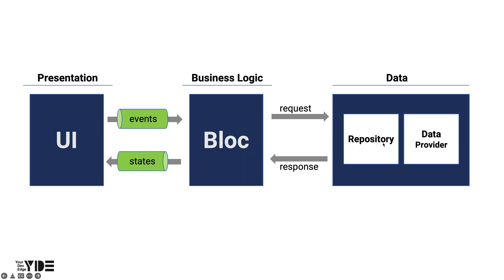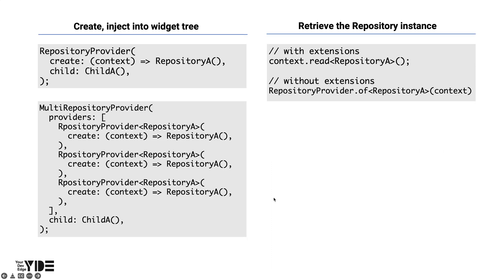However, due to the nature of this repository, only access to the widget tree is required and there is no need to listen for changes. Flutter bloc provides a separate repository provider that makes it easy to access this repository. Since this repository provider is used as a dependency injection widget, it can be used to simply share data on the widget tree.